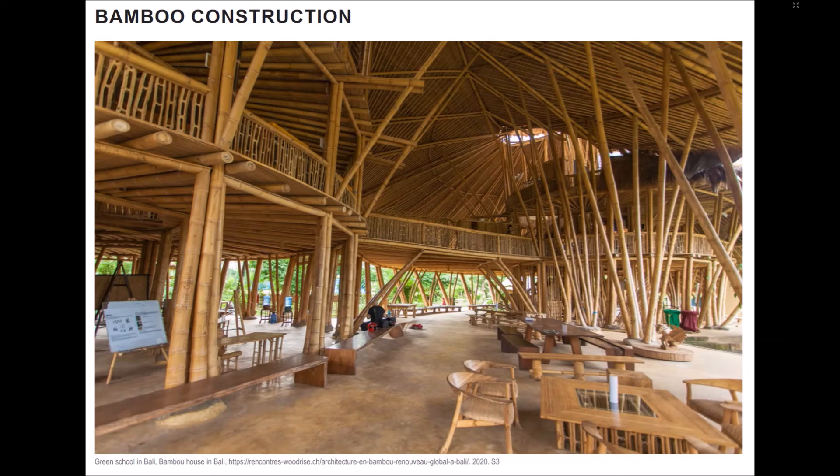Bamboo has always been a basic building material in tropical latitudes. In Bali, in the 1990s, an Australian designer was the first to use bamboo in a contemporary way. She worked with scientists to treat bamboo from beetle pests and turn it into a commercially viable building material. Today, the Bali Green School plays a lead role in building often winding structures.